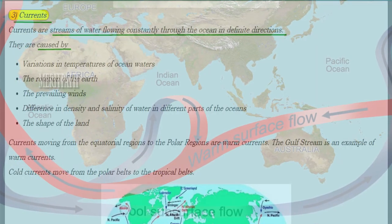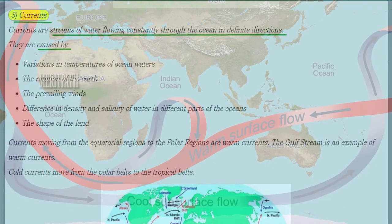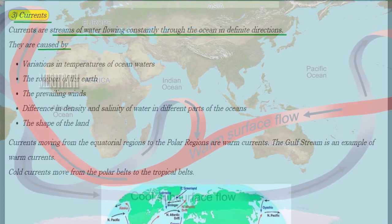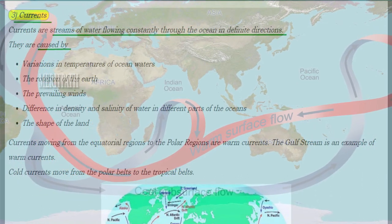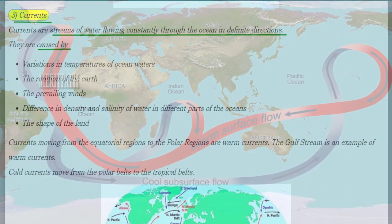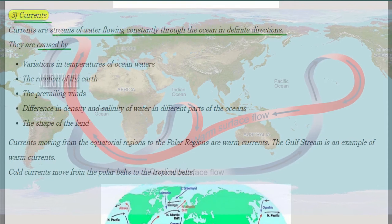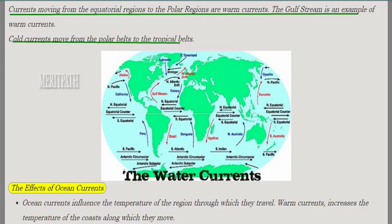Currents are streams of water flowing continuously through the ocean in a definite direction. They are caused by variations in the temperature of ocean water, the rotation of the earth, prevailing winds, differences in density and salinity in different parts of the ocean, and the shape of the land. Currents are of two types: warm currents and cold currents. Warm currents flow from the equatorial region to the polar region — for example, the Gulf Stream. Cold currents move from the polar region to the tropical region.